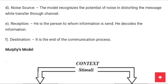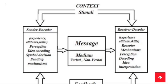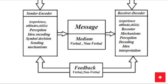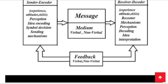Murphy's model defines context and stimuli — stimuli meaning what stimulates behavior to do something and provide information. The sender-encoder uses experience, attitude, and skills, including perception, idea, encoding, symbol, decision, and sending mechanism. The message passes through a medium, both verbal and non-verbal, to the receiver-decoder, who uses experience, attitude, and skills to decode and understand the message.